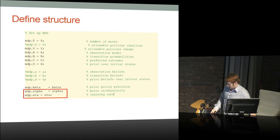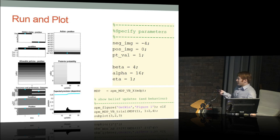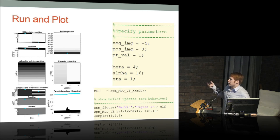Once you have all that, you set your parameter values for a simulation and plug the whole MDP structure into the function Carl wrote: spm_MDP_VB_X. It takes your model, runs the message-passing algorithms that minimize free energy, and spits out what the agent chose. This is an example of the kind of simulation outputs you'll get. There are different plotting scripts depending on what you want to look at; for a single trial it's the MDP_VB_trial function — all built into SPM in the DEM toolbox, so as long as you have SPM 12 it's all there.